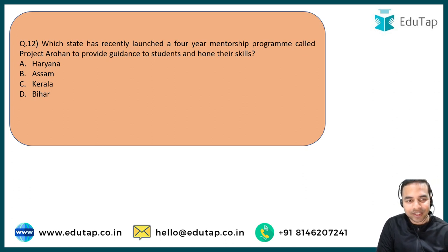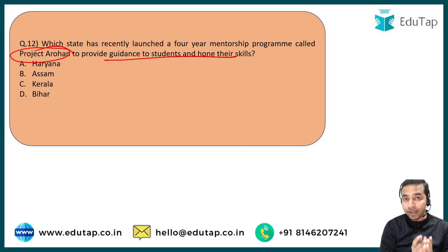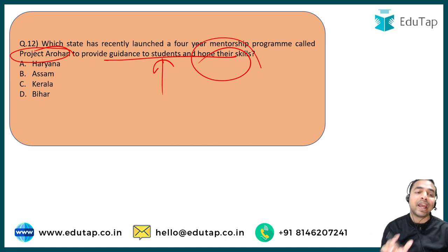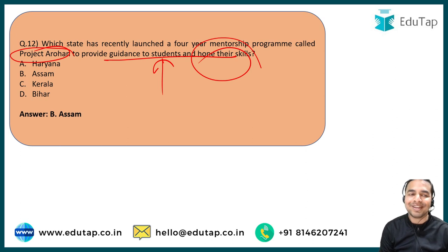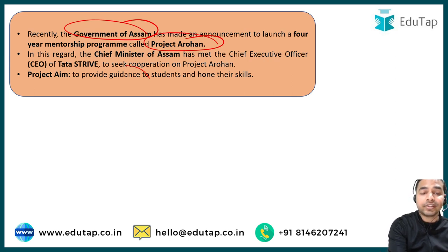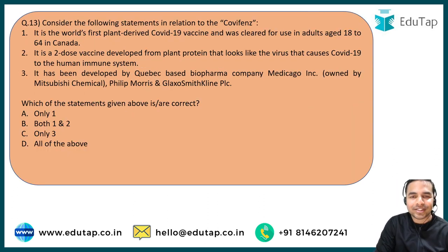The twelfth question: which state recently launched the four-year mentorship program called Project Arohan to provide guidance to students and hone their skills? Options are Haryana, Assam, Kerala, and Bihar. The right answer is Assam. The Government of Assam announced that it will launch this four-year mentorship program named Project Arohan to guide students and carry out their skill development.